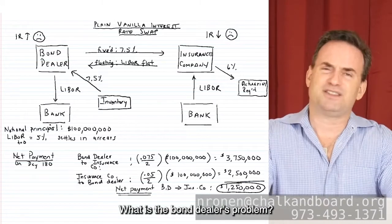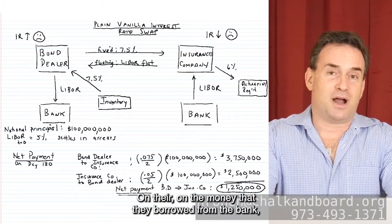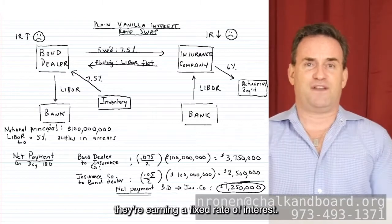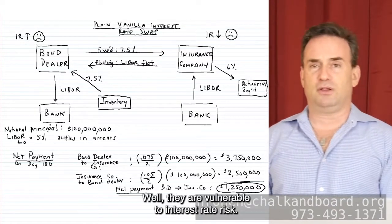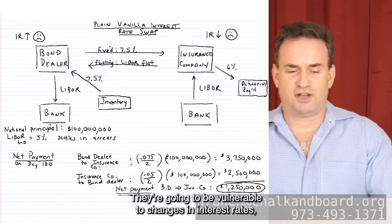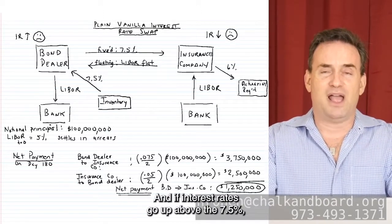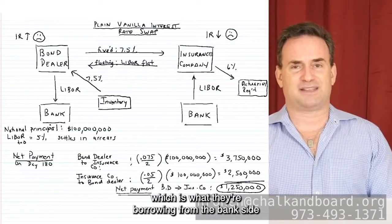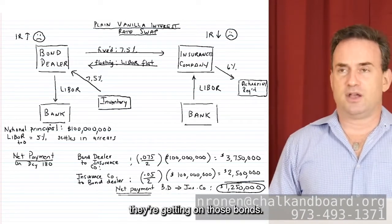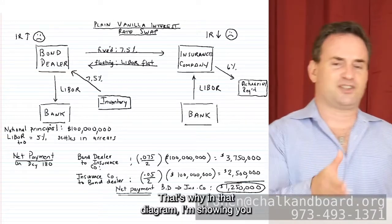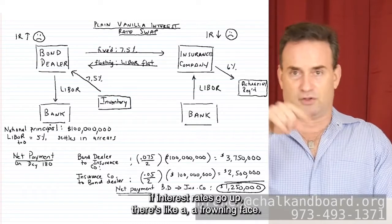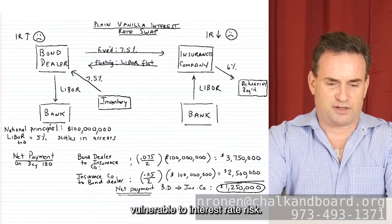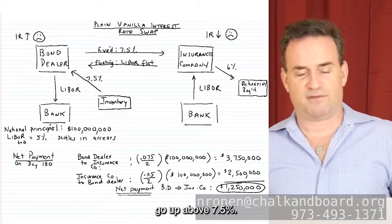So the bond dealer has a problem. On the money they borrowed from the bank, they're paying a floating rate of interest. But on their bond inventory they're earning a fixed rate. They are vulnerable to interest rate risk, especially if interest rates go up above 7.5% — because then the cost of financing exceeds the return on those bonds. That's why in the diagram I'm showing a frowning face: the bond dealer would not be happy if interest rates go up above 7.5%.